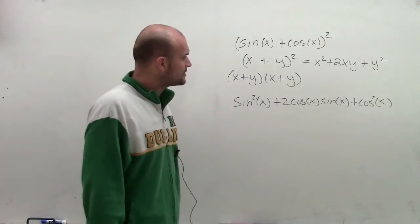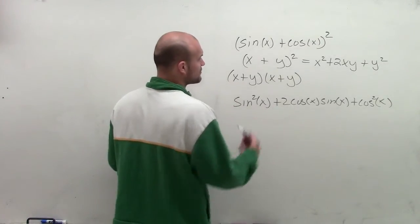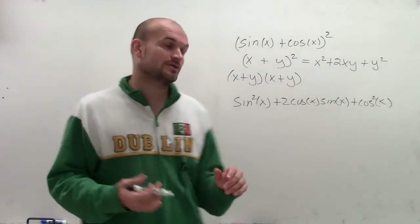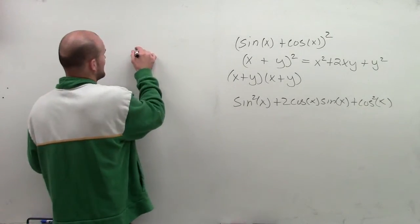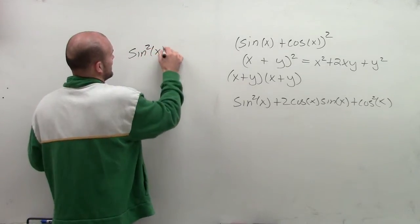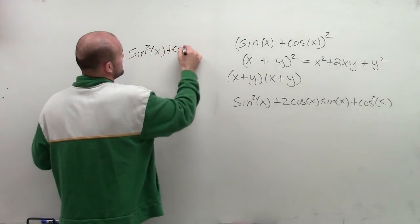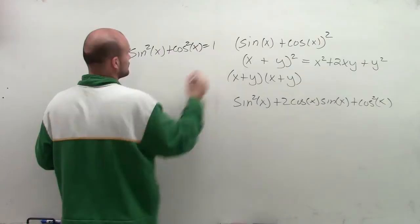Now what I want to do is see how I can rewrite these. Can I rewrite them in terms of sine or in terms of cosine? I look at my Pythagorean identity, which says sine squared of x plus cosine squared of x equals 1.